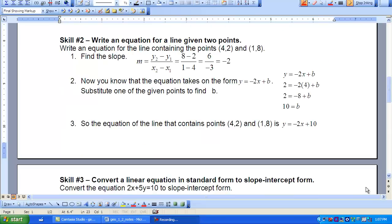The next skill you'll be asked to perform in this lesson is to write an equation for a line given two points. So we know that if you have the slope of a line and you know its Y-intercept, we know how to write an equation for that line. So what we need to do is find the slope first.